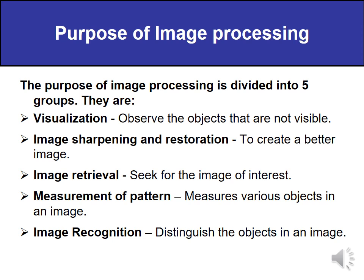The purpose of image processing is divided into five groups: visualization, image sharpening and restoration, image retrieval, measurement of pattern, and image recognition. Visualization is observing objects that are not clearly visible. Image sharpening and restoration is required to create a better image — if it is not clearly visible, it needs to be sharpened and restored. Image retrieval is seeking the image of interest; when our area of interest is a small portion of a large image, extracting or identifying that particular area is known as image retrieval.